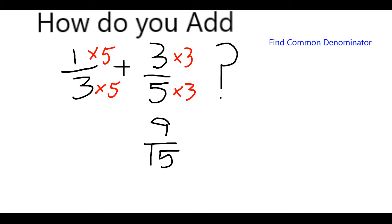And on the other side, I have 1 times 5, which is 5, over 3 times 5, which is 5 fifteenths.